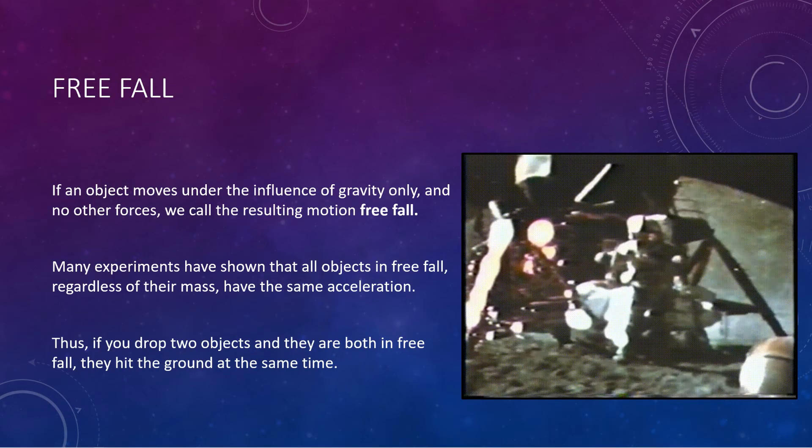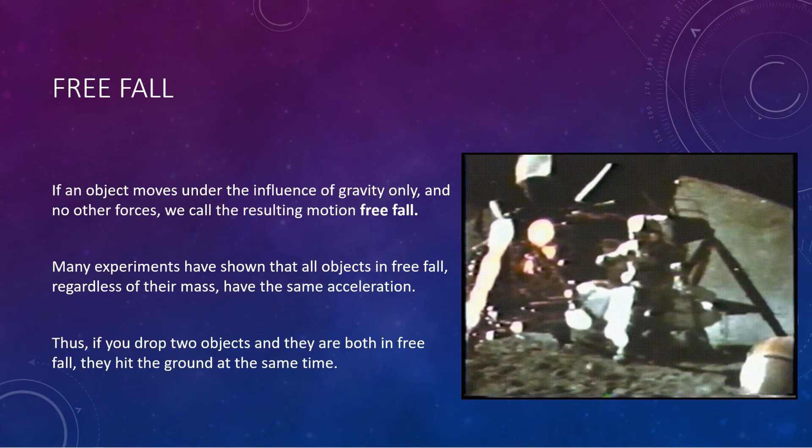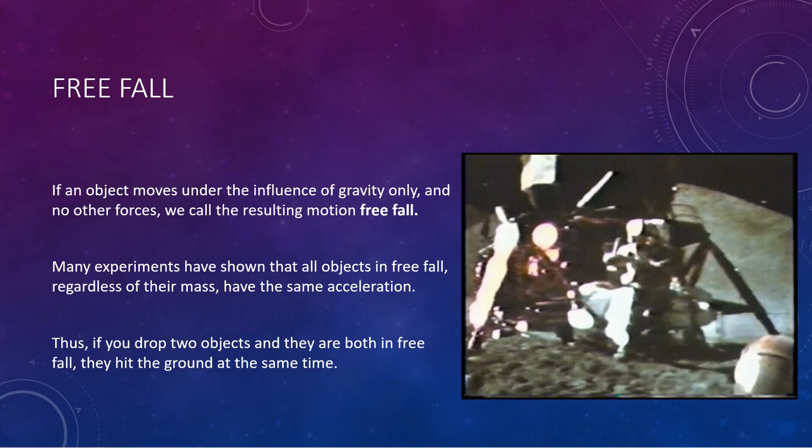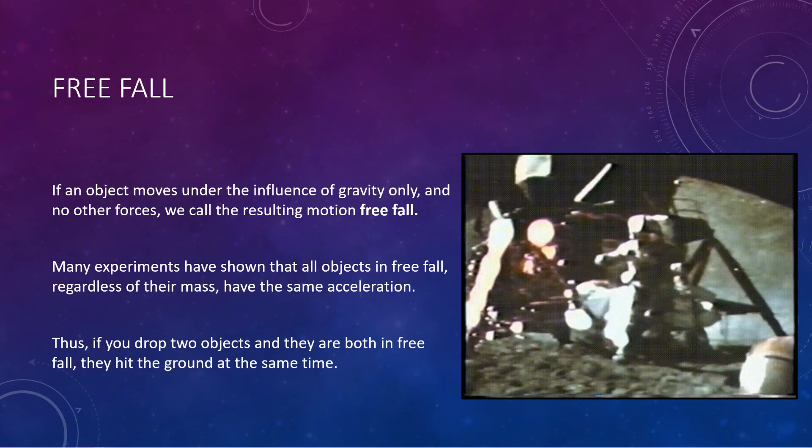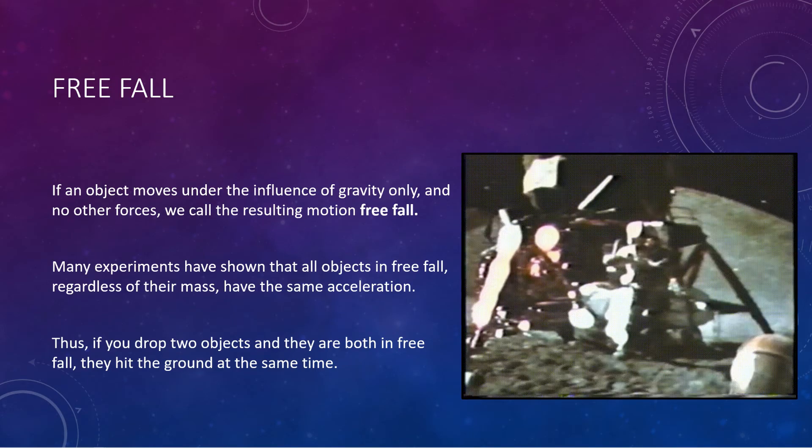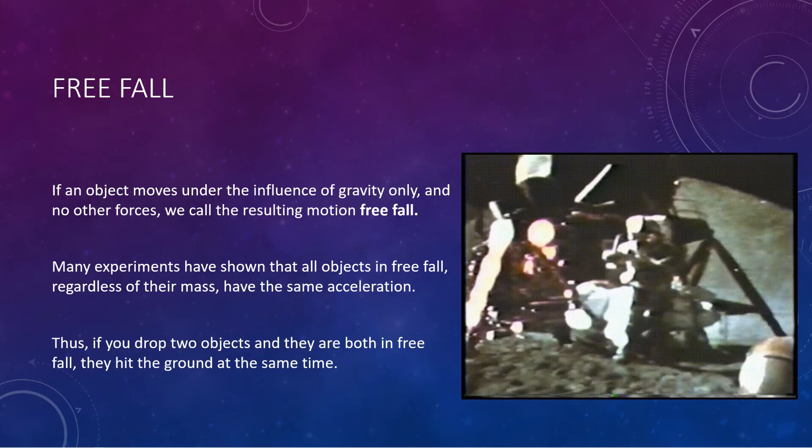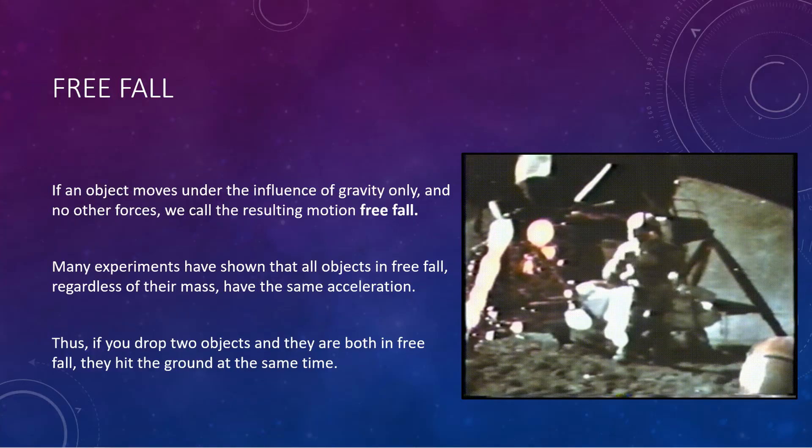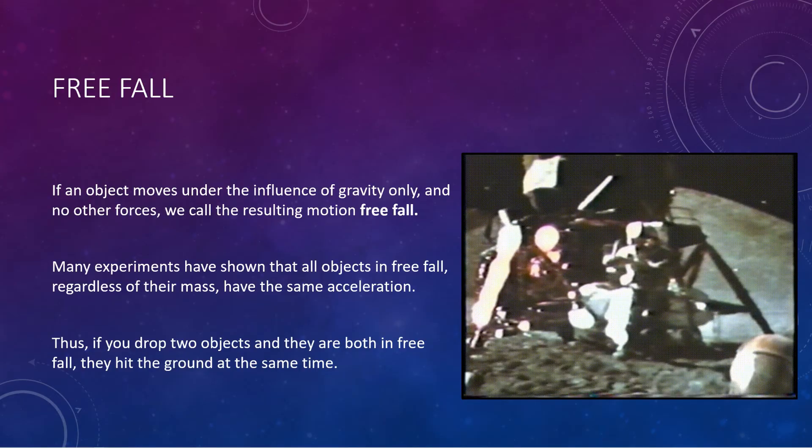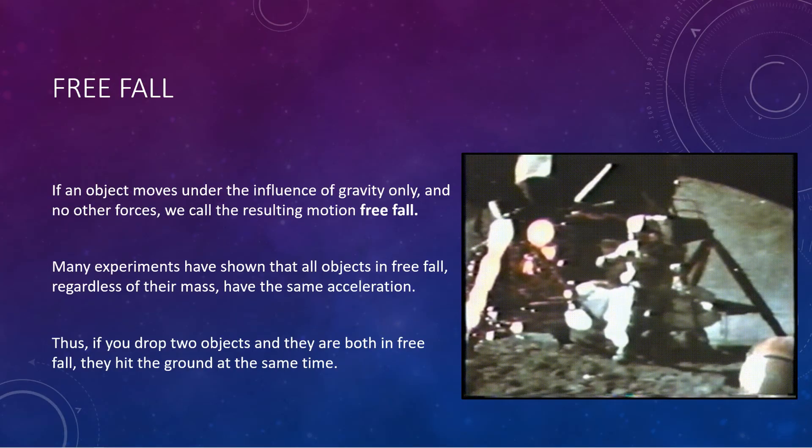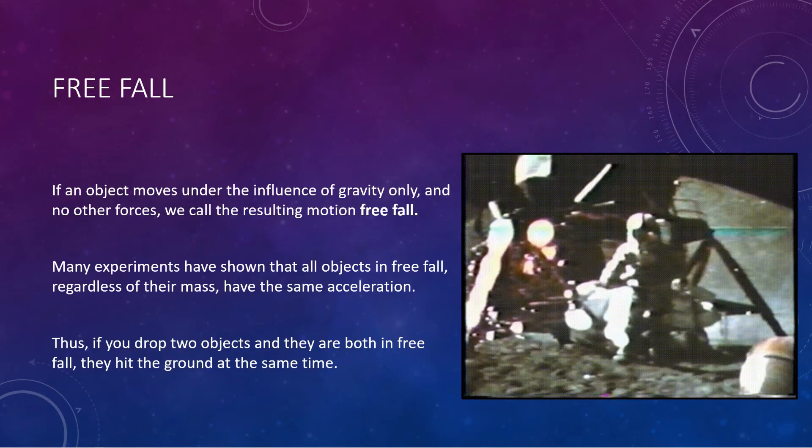So, we're going to consider a very specific case of vertical motion known as freefall. If an object happens to move under the influence of gravity only, in other words, no other forces, we call the resulting motion freefall. So, this is really important. So, we're saying it's only under the influence of gravity, no other forces. So, what that means is if you have an object falling through the air or thrown through the air, we can't have anything else acting on it, which means we need to ignore things like air resistance or drag. And we do that in our material. So, we do tend to ignore air resistance. So, if you have an object in freefall, no matter what the object is or how massive that object is, if it's in freefall, it will have the exact same acceleration, no matter what.